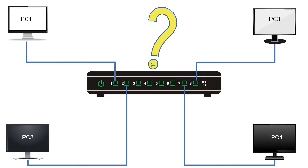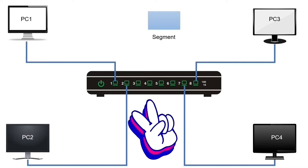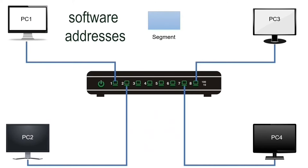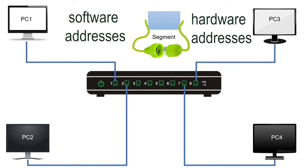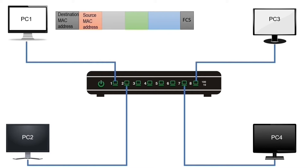When a PC wants to send a data stream, it breaks the data into small pieces known as segments. There are two types of addresses — software addresses and hardware addresses — and the device attaches both to each segment. It first adds software addresses, also known as IP addresses; a segment with IP addresses is known as a packet. After adding software addresses, the device attaches hardware addresses, also known as MAC addresses. A packet with MAC addresses is known as a frame.